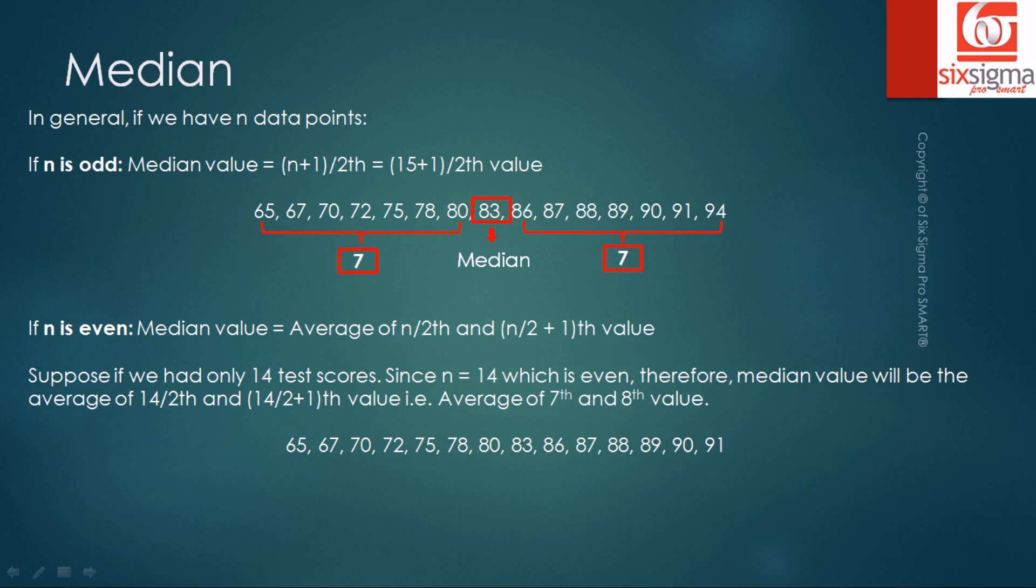Now let's talk in general. If we have n data points and if n is odd, the easy way to find the median is by applying this rule which says it is the n plus 1 by 2th value.